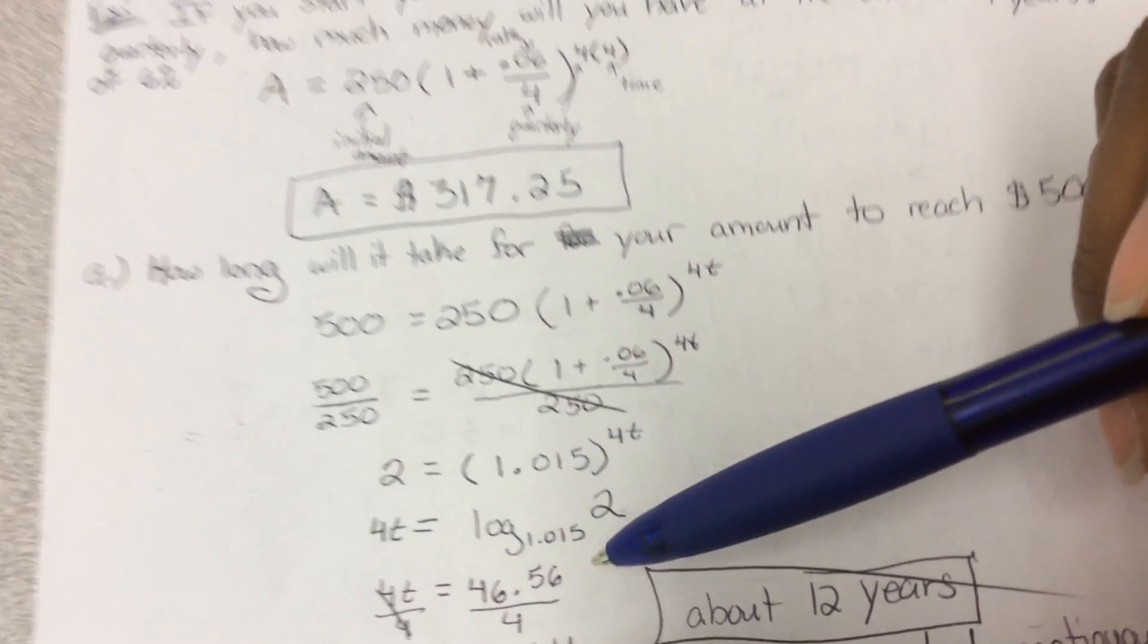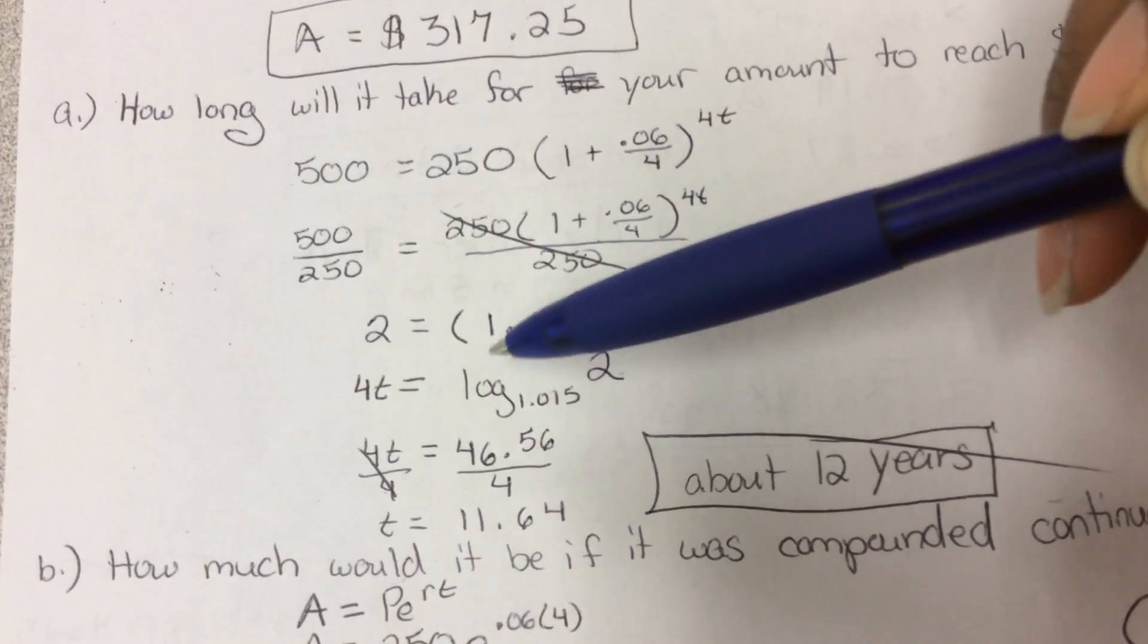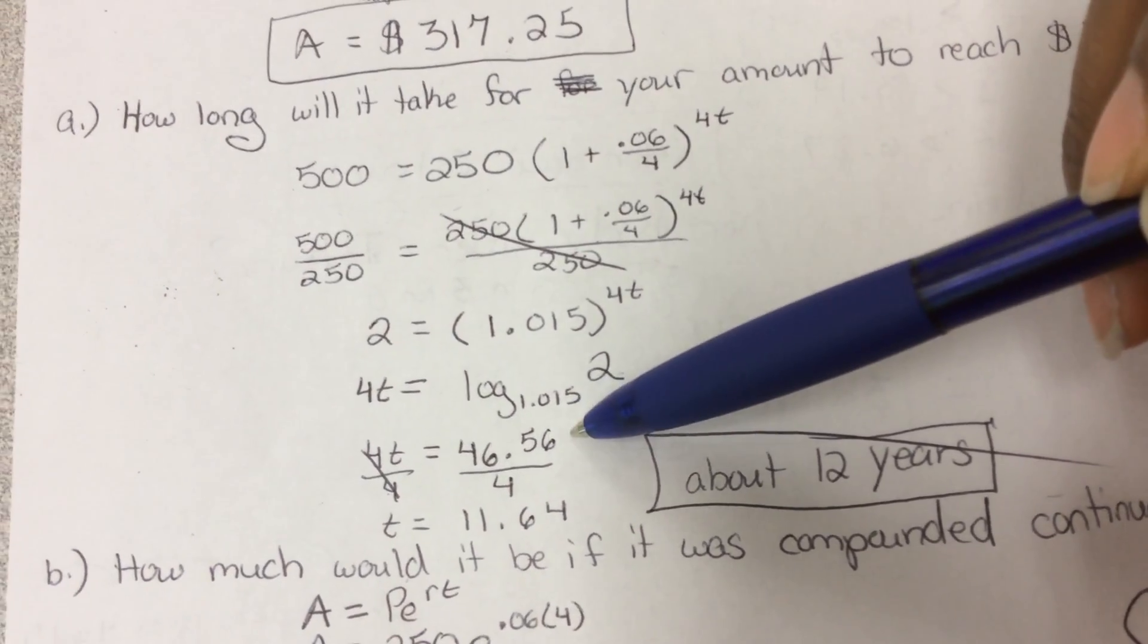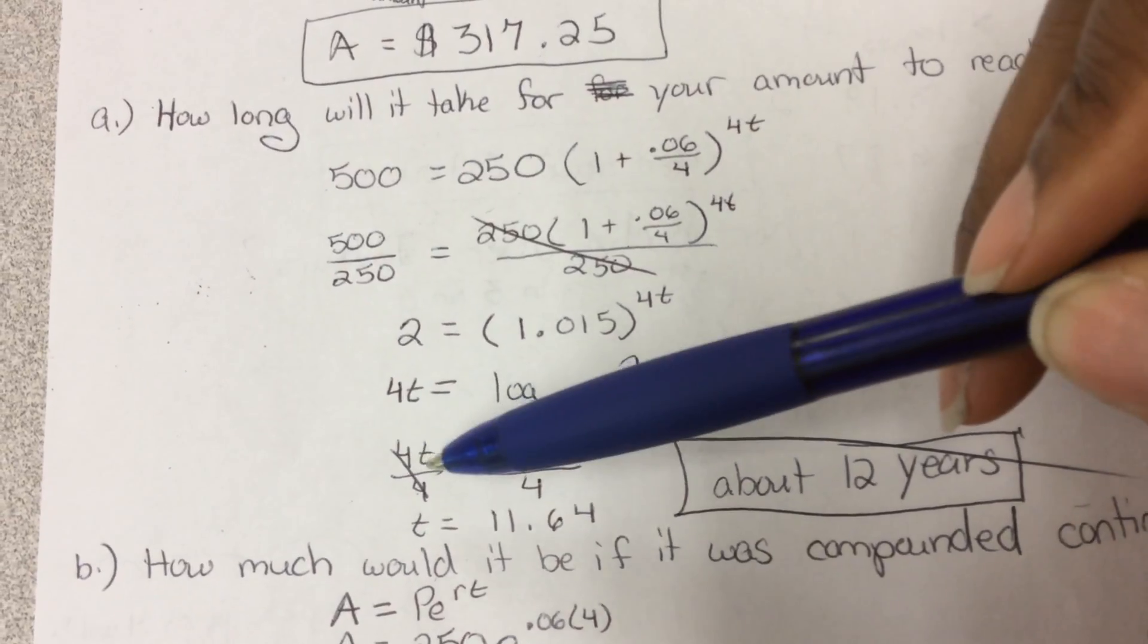Drop the base and flip it, if you remember the tune. And then I type log base 1.015 of 2 in the calculator, and I get 46.56 equal to 4T.